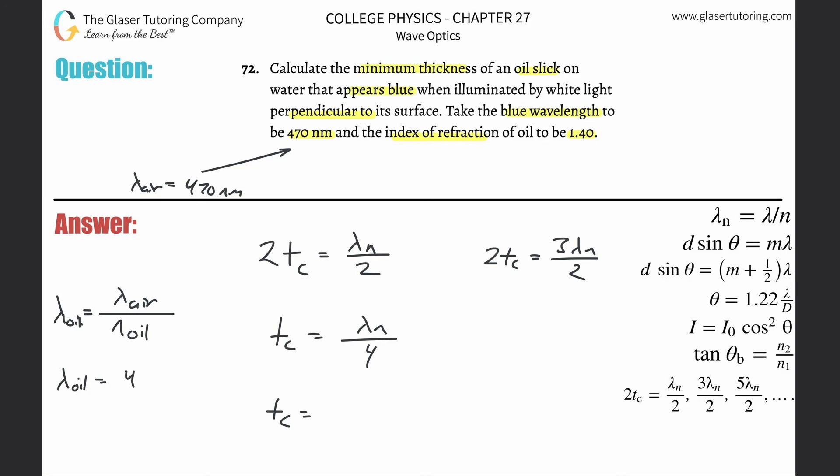That's the wavelength then in air, which is 470 nanometers. I'm going to leave it in terms of nanometers here and divide that by 1.4. So we take our 470 divide by 1.4, we get 335.7.